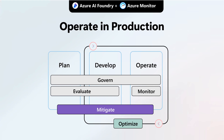Operating AI agents in production requires a holistic lifecycle approach. Planning, developing, and running your AI must be supported by continuous governance, evaluation, and monitoring to maintain compliance, quality, and performance. These overlays don't simply checkpoint one-time milestones — they actively protect your application in real time. Mitigation strategies kick in immediately when issues arise, and ongoing optimization loops feed production insights back into development. Azure AI Foundry combined with Azure Monitor delivers these integrated capabilities, offering seamless visibility and control throughout the AI lifecycle.